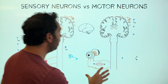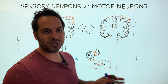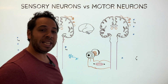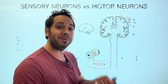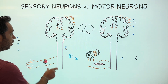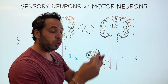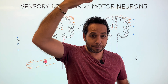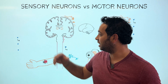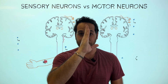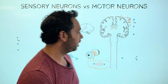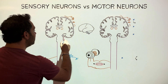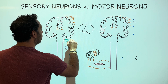Before we begin, let's make sure we understand what we're looking at and label some key parts. In both structures on the left and right, we're looking at the central nervous system — the CNS. We have the spinal cord, which takes information to and from the brain, and we have a cross-section of the brain. We also have the connector between the spinal cord and the brain, which we'll label as the brainstem.